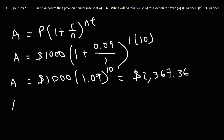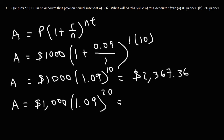Now let's move on to Part B: what will be the value of the account after 20 years? The only thing we need to change is the time from 10 years to 20 years. So this is going to be 1,000 times 1.09 raised to the 20th power, and the answer is $5,604.41.